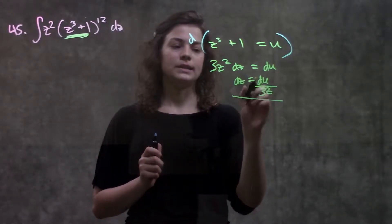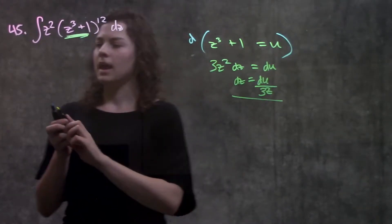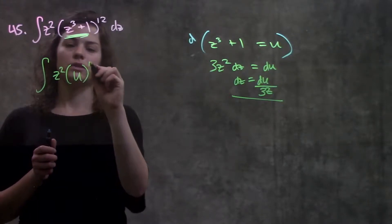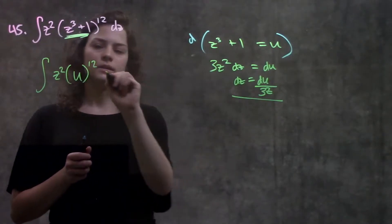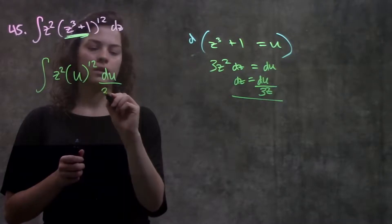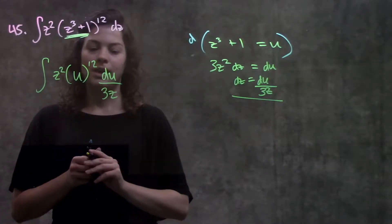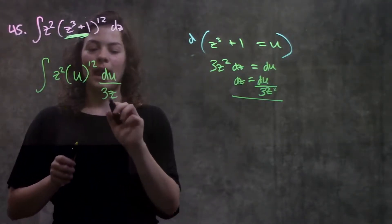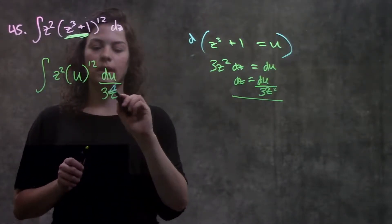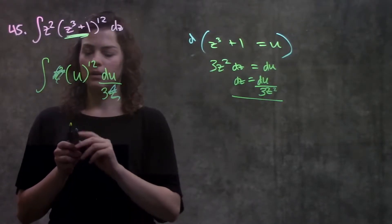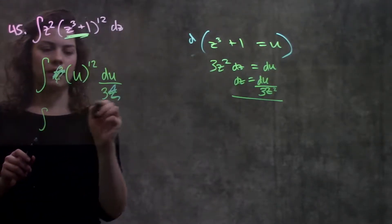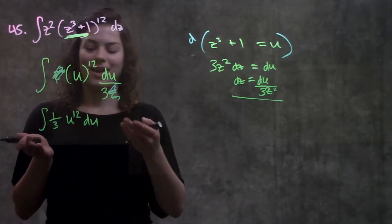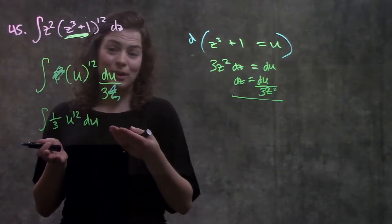So I'll take my dz value and plug it in. And when I do that, I get z squared times, this value is now u to the 12th, and my dz is equal to du over 3z squared. Perfect. And now looking at what I have, I see that this z squared can cancel with this z squared. And now I'm just left with, I'll move this out over here, 1 third u to the 12th du. And this is great. I know how to take the integral of this.